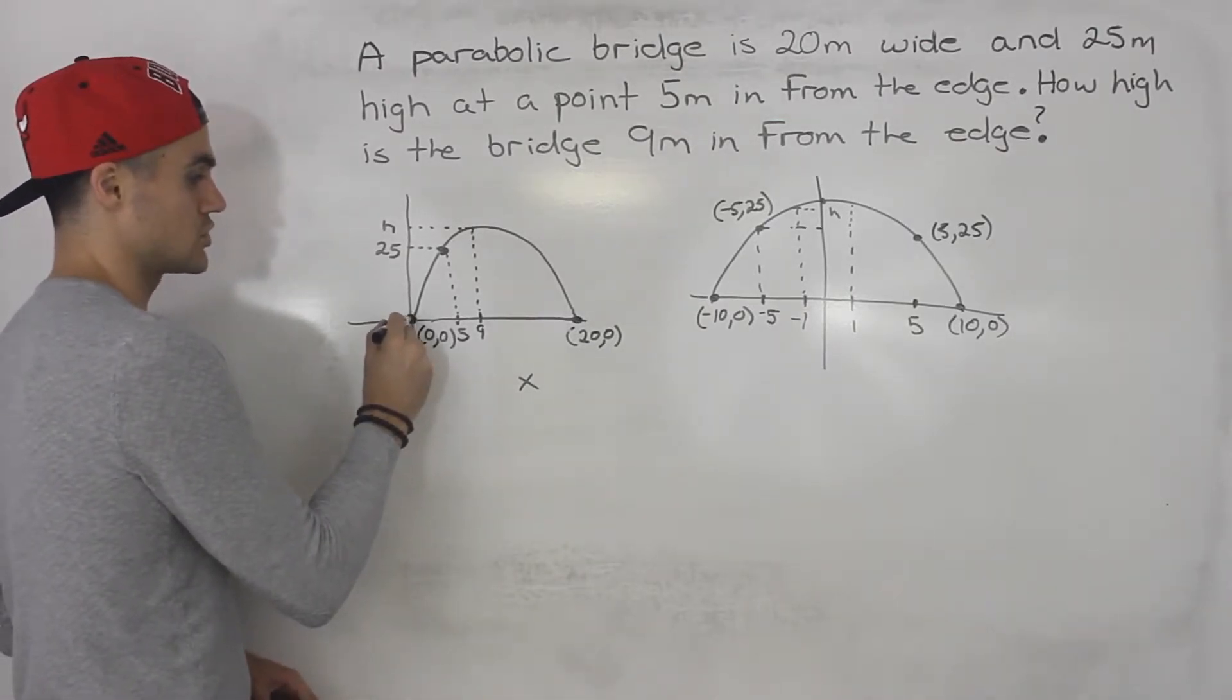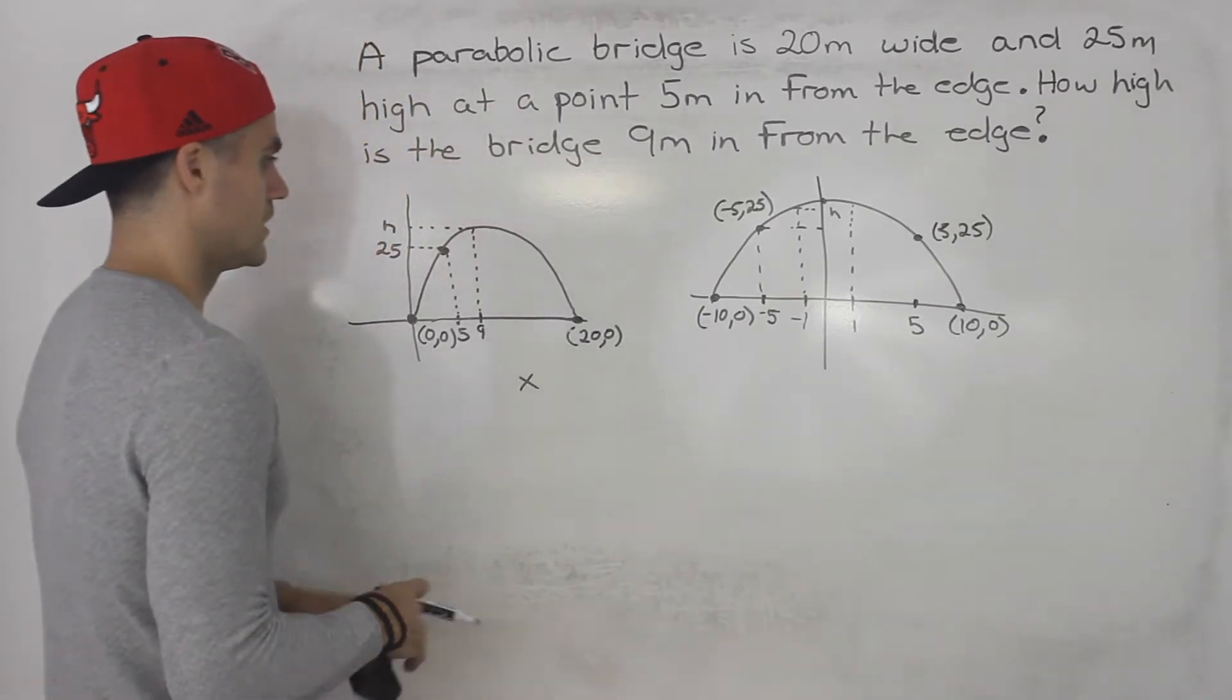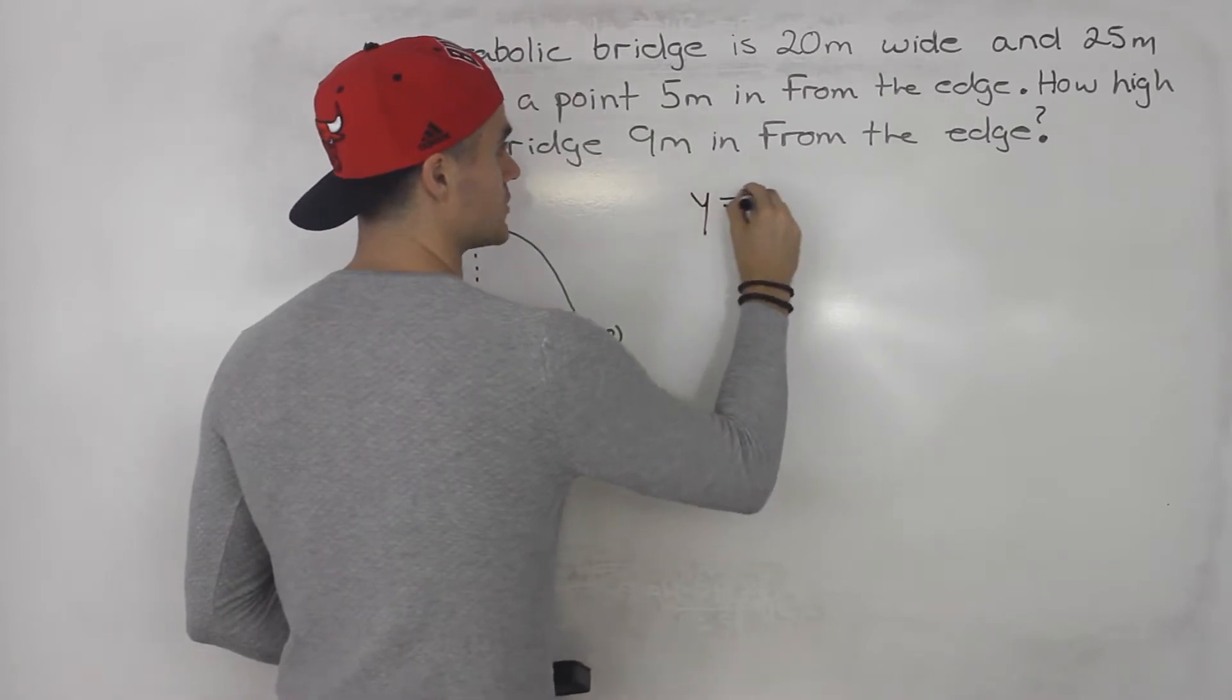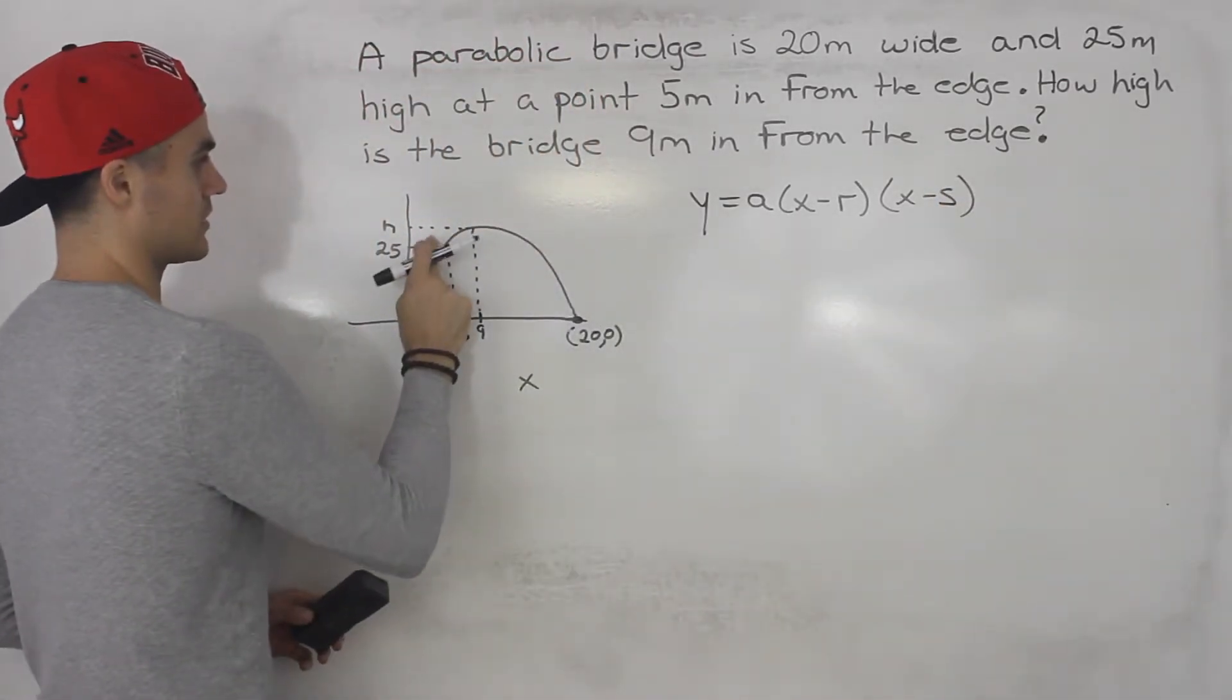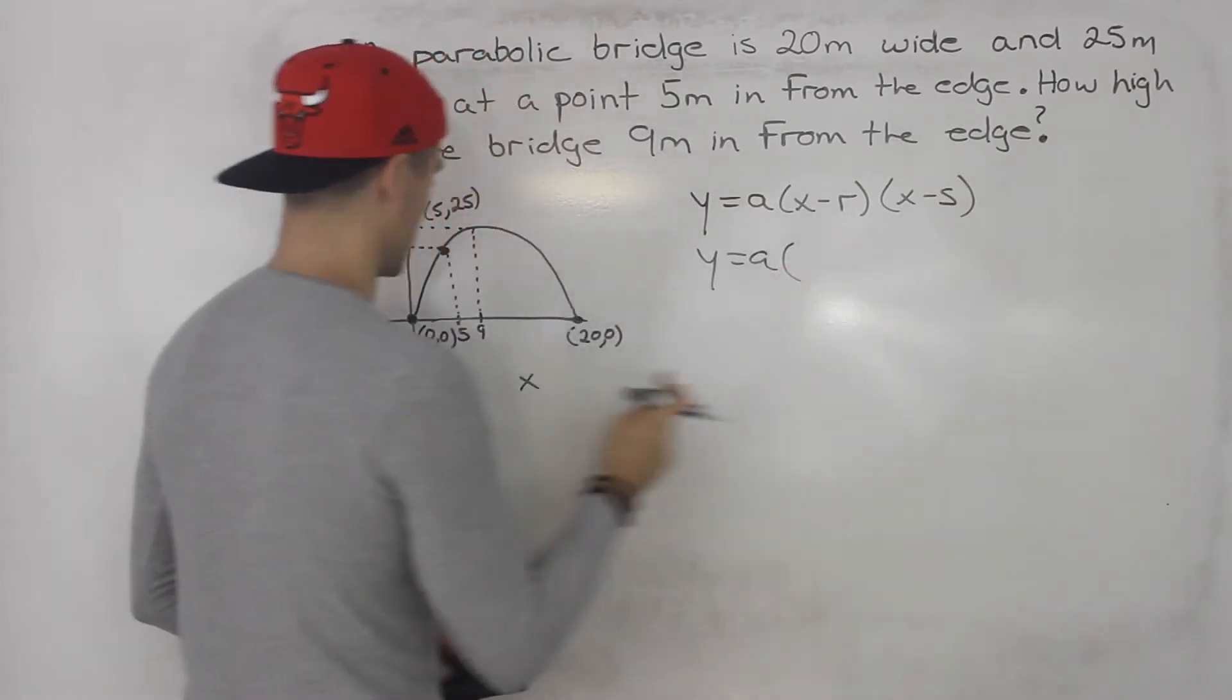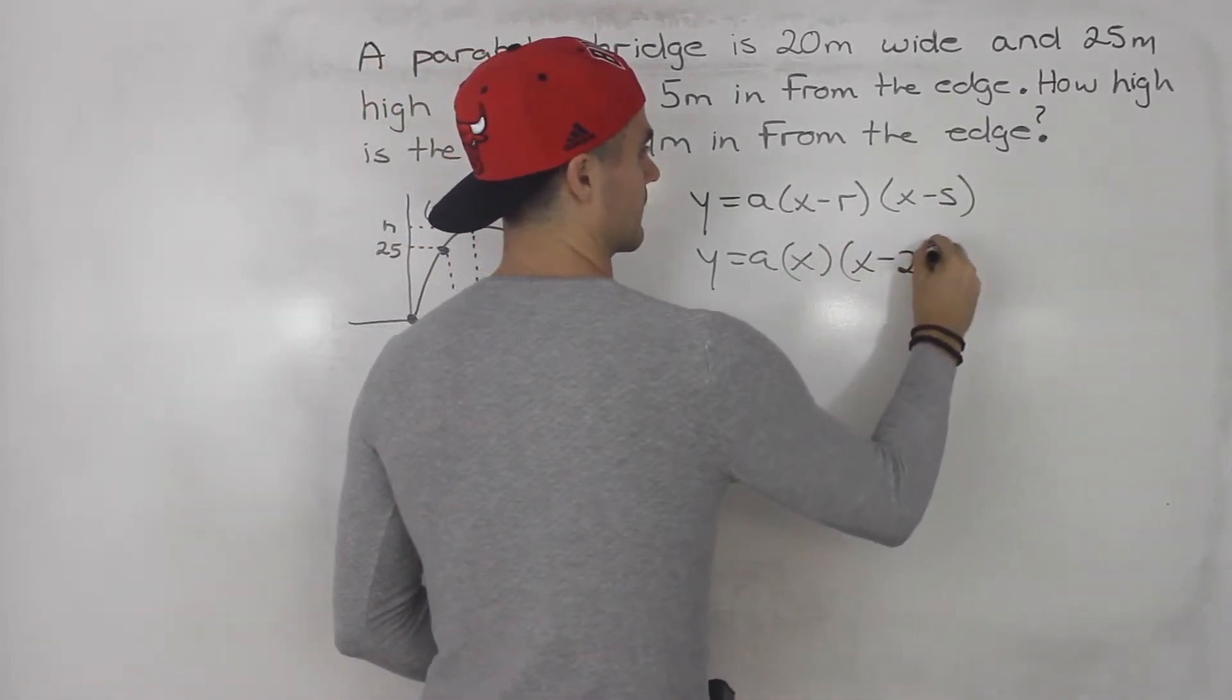Personally, I like to have the edge at the origin if I can. But sometimes teachers may expect you to do it this way. So going back to this here, notice that we can get an equation. Because we have the intercepts and we have a point, this point here, which is 5 and 25. So we'd have a, x minus one of the intercepts, which is just 0. So x minus 0 is just x. And then x minus 20.